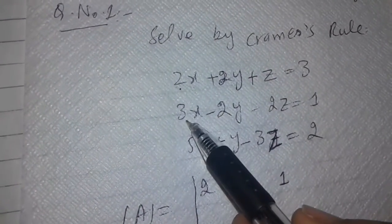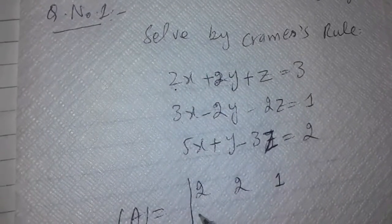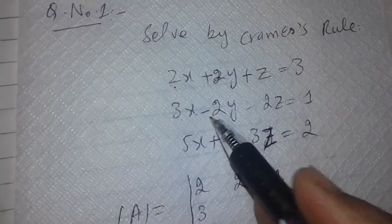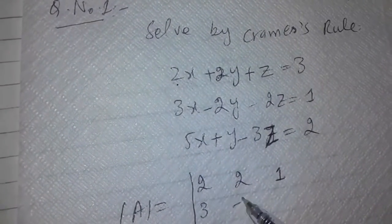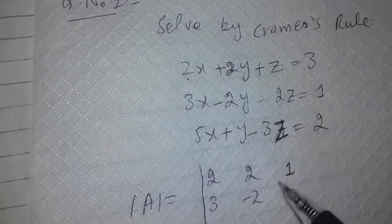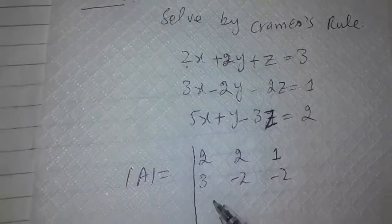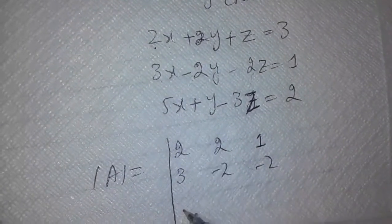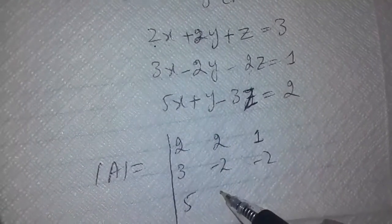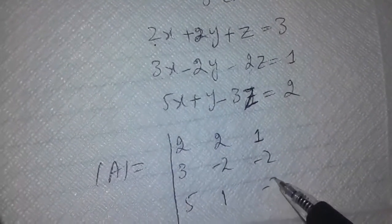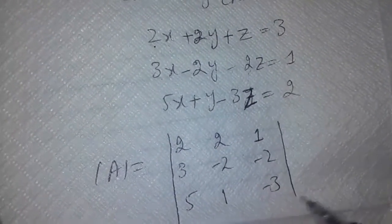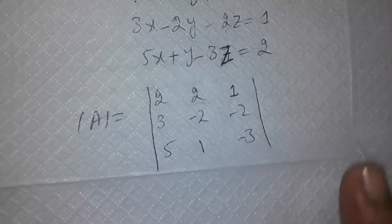In the second equation, the first variable is 3x so we take 3 as the constant, here is minus 2, and the third is minus 2. For the third equation, the first variable is 5, the second is 1, and the third is minus 3. So we will take the determinant of this 3 by 3 matrix.